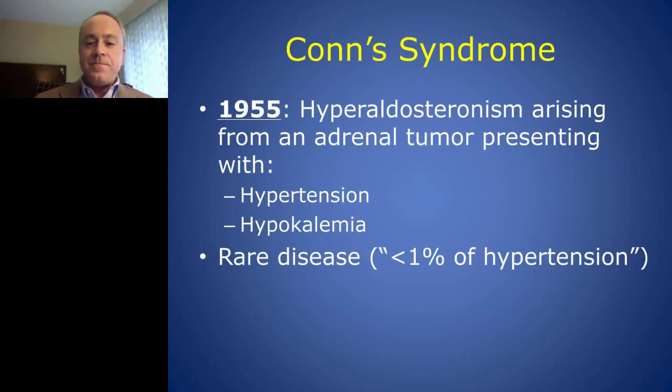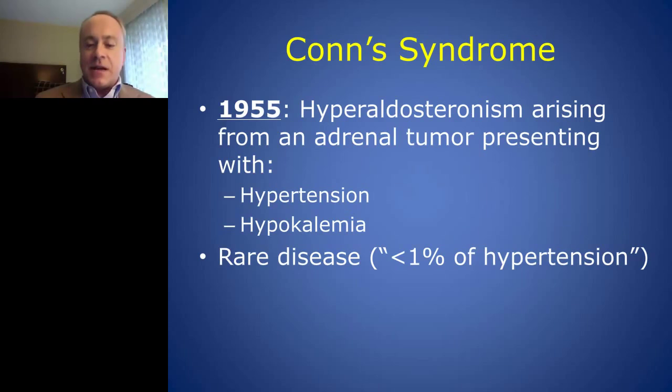Conn's syndrome is probably the most familiar clinical representation of hyperaldosteronism. It was described in 1955 as hyperaldosteronism arising from an adrenal tumor that presented with hypertension and profound hypokalemia. This is perhaps where the concept of a rare disease came about, as it was defined as only less than 1% of hypertensives having this form of hypertension.